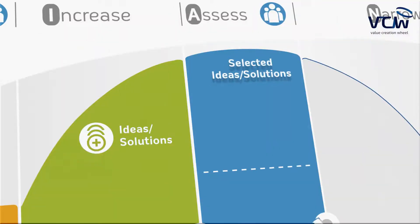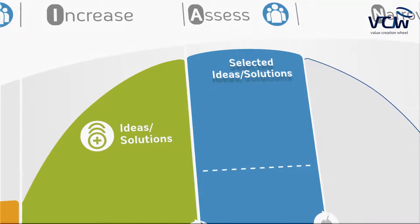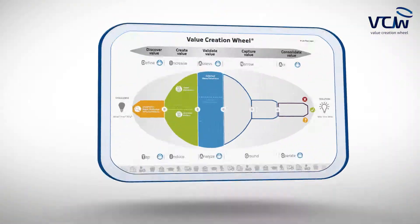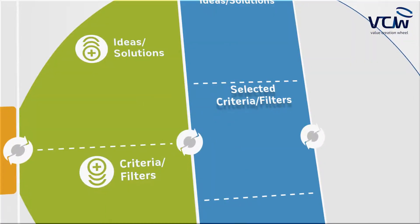Once we have a significant amount of solutions and filters, we feed the key decision makers with this data. In the presence of this data, the key decision makers might say: out of these solutions, there are 20 worthwhile to explore, and out of the filters, there are 10 that we should definitely consider. Then the key decision makers establish a ranking.